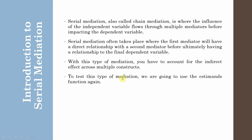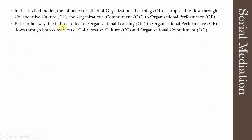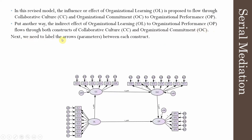For this type of mediation, we are going to use the Estimates function again, as we did in the last case where we assessed multiple mediators. In this model, the influence of organizational learning (our IV) is proposed to flow through two mediators — collaborative culture and organizational commitment — to organizational performance. The indirect effect of organizational learning (OL) to organizational performance (OP) flows through collaborative culture (CC) and organizational commitment (OC). Next, we need to label the arrows between each construct, just as we did in normal parallel mediation.